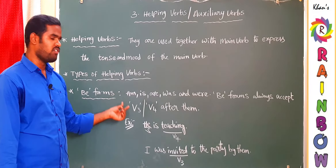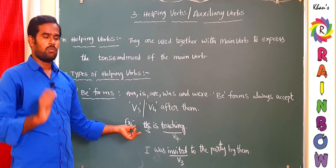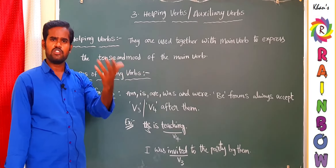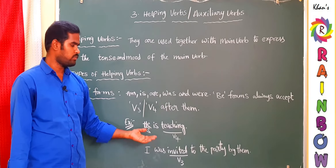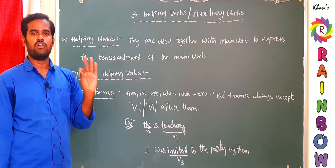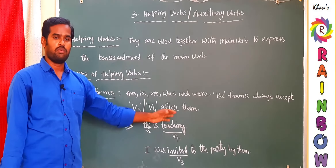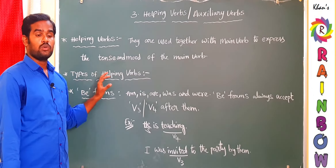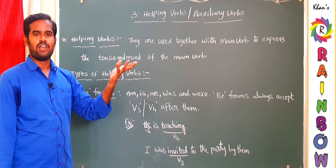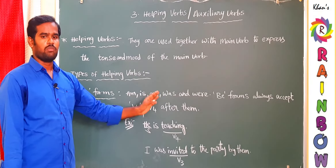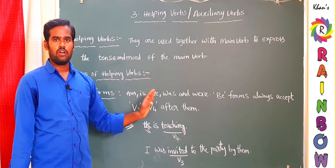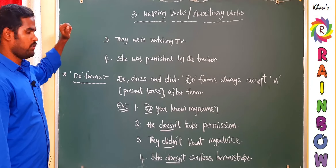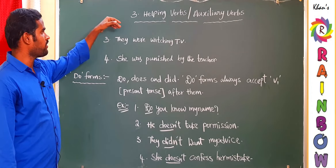This rule must be carefully remembered because most students make mistakes after B-forms — some use V1 or V2 after B-forms. V1 and V2 never come after B-forms. This is a basic and fundamental rule: after B-forms, only V3 or V4 is allowed. Let us look at two more examples for B-forms.